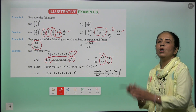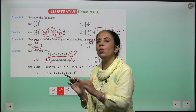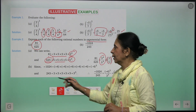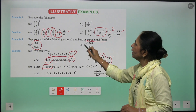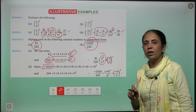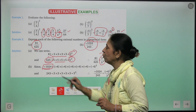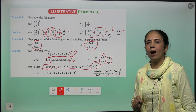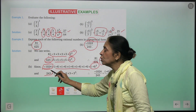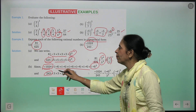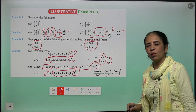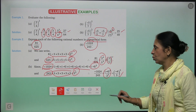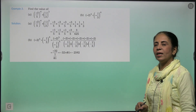Similarly, to express -1024/243 in exponential form: -1024 is broken down and written as (-4) raised to the power 5, and 243 = 3 multiplied by itself 5 times = 3⁵. So finally we write it as (-4/3) raised to the power 5 — that is your answer.